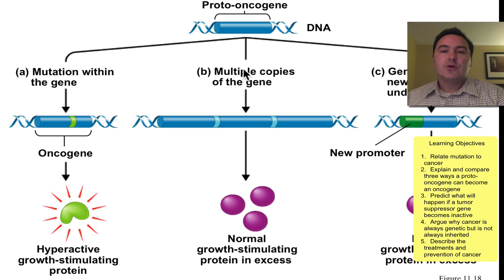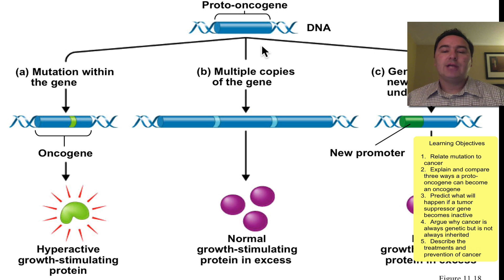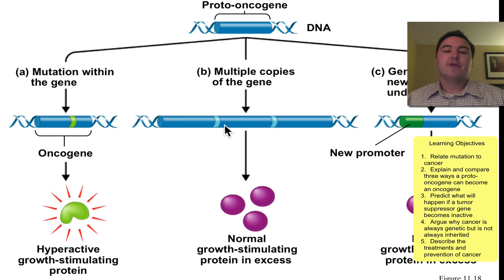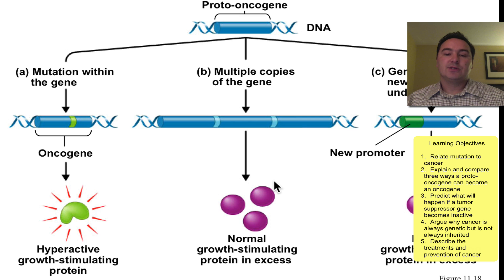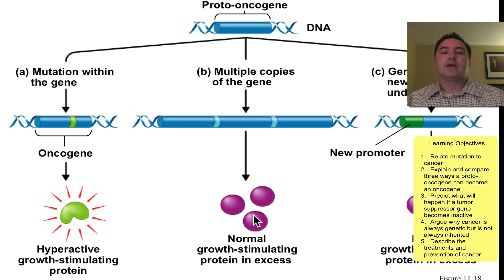Likewise, you could have a mutation that causes an entire gene duplication event — maybe the entire gene gets copied multiple times. Each one of these copies goes through the process of transcription and then translation, and you get excess growth-stimulating protein — so three of the purple spheres here instead of just one.